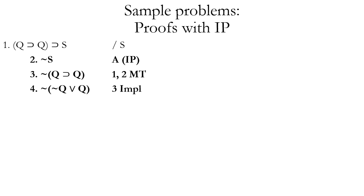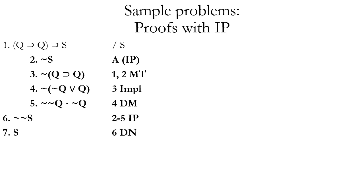We can use the implication rule on the compound proposition Q horseshoe Q inside the parentheses on line three to generate tilde Q wedge Q. We're using material implication — we have to add a tilde to our antecedent, so the first disjunct becomes tilde Q. Now, can you remember the rule we can use on line four to turn that negated disjunction into a conjunction of negations? The answer is DeMorgan's. If we use DeMorgan's on line four, we already have our conjunction of contradictory propositions. So we're ready to exit the scope of our assumption. We always add a tilde when using the indirect proof rule, so our initial assumption tilde S becomes tilde tilde S when we exit. Because our conclusion was the simple proposition S, we use double negation on line six to remove those two tildes.